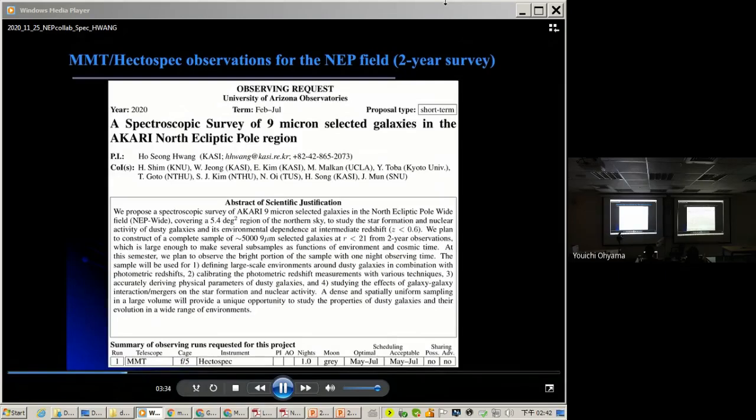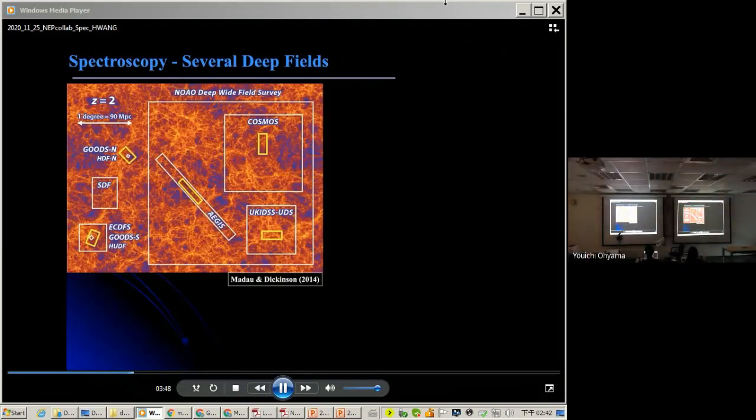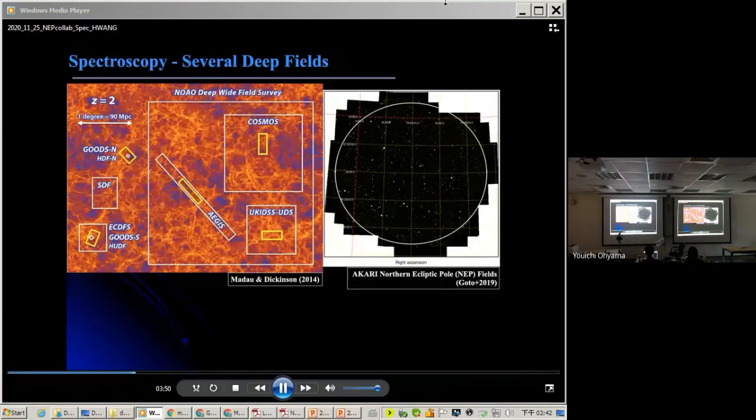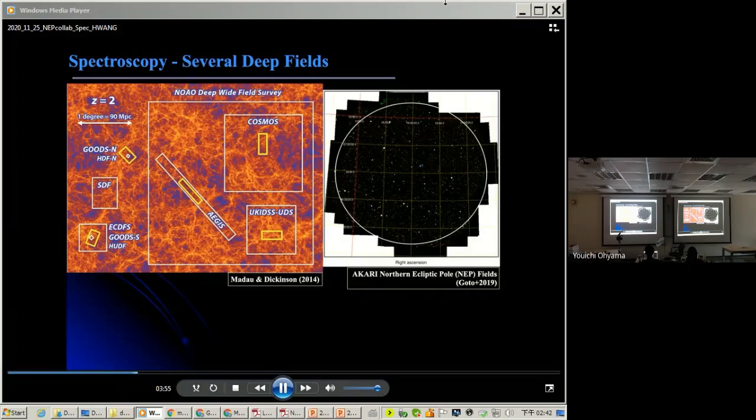And the second thing is about MMT/Hectospec observations. So this is a two-year survey, one night for each semester. We plan to have four nights over four semesters for targeting 9-micron selected galaxies. If you compare this NEP wide field with other several deep fields, the one good thing about this NEP wide field is the spatial coverage. It is one of the largest fields for many several deep fields, meaning that you can study the large-scale structures, focusing on the evolution of large-scale structures or the galaxy environment as a function of redshifts.